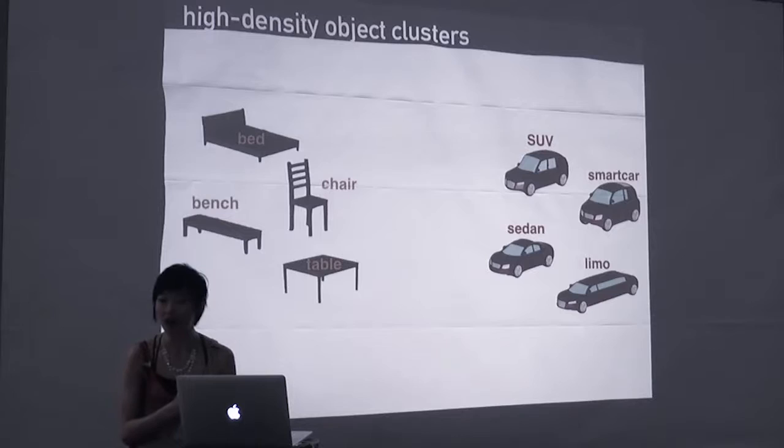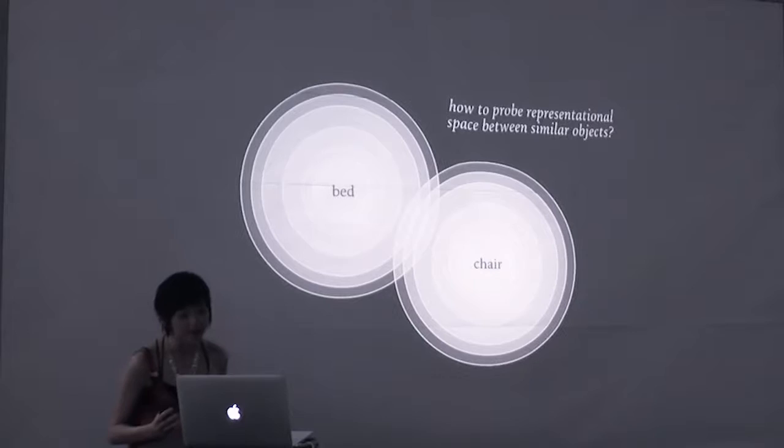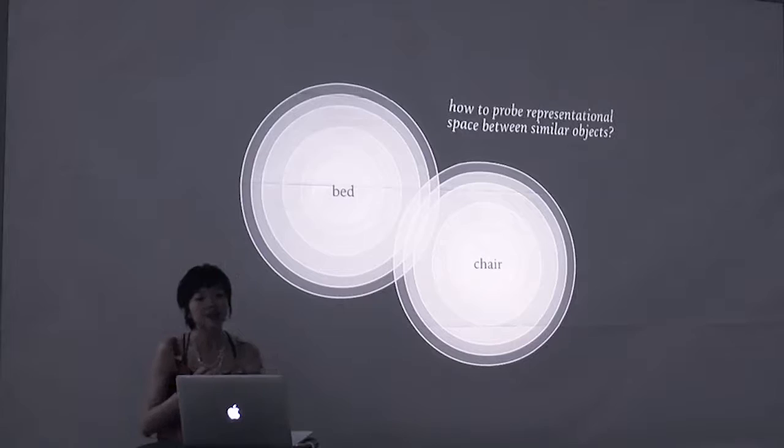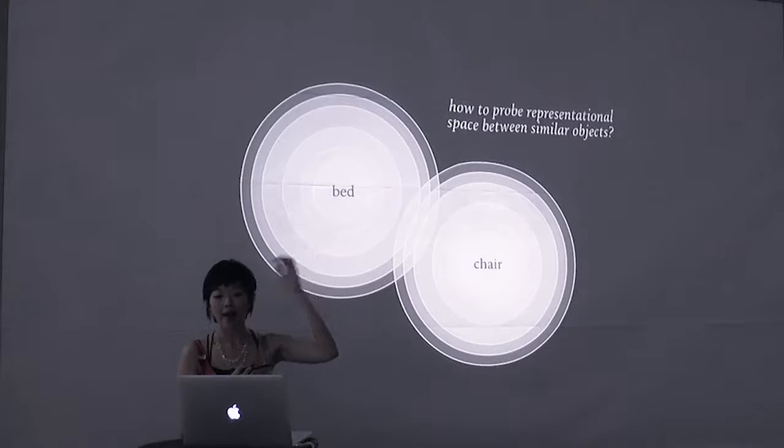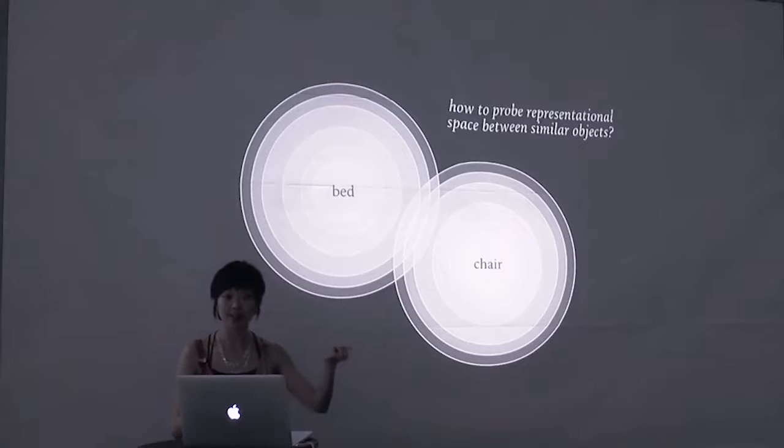Now, since our next step involved taking more perceptual measurements, we thought it would make sense to focus on these high density clusters containing objects that people had struggled to differentiate in their drawings, since there might be more room to look at learning. So we built some 3D mesh models of furniture and cars. Actually, not quite us, Lauren Kay, a Brooklyn-based science animator created them, so here's a shout out to her. Now, why did we do this? Well, the key reason is the picture we had in our minds of what these representations are like has them as these point clouds embedded in a high dimensional feature space. And the confusable objects are the ones whose clouds or densities overlap, at least to some extent. So we needed a way of probing the representational space continuously between similar objects.